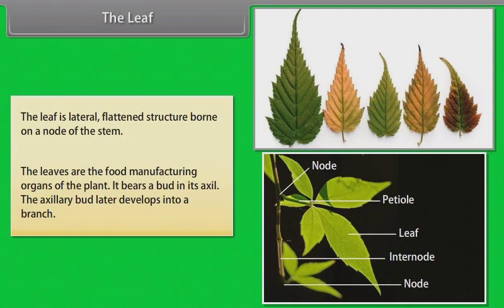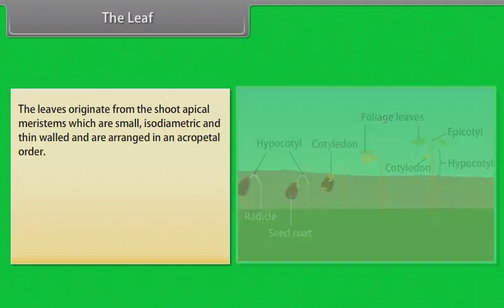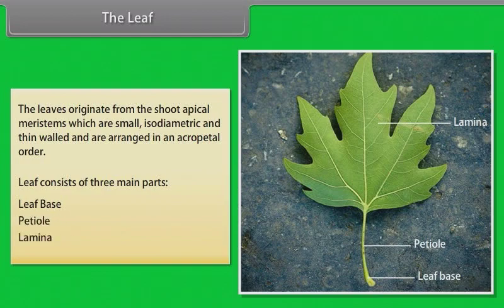The axillary bud later develops into a branch. The leaves originate from the shoot apical meristems, which are small, isodiametric and thin-walled and are arranged in an acropetal order. Leaf consists of three main parts: leaf base, petiole, lamina.